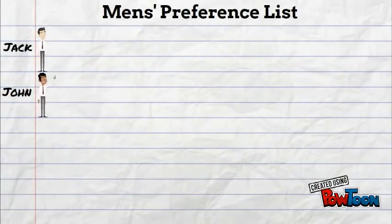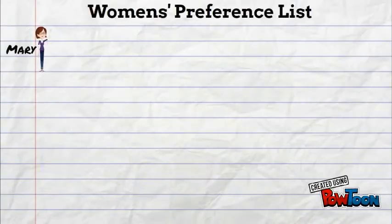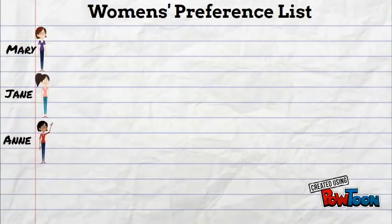To make things simpler, let's look at an example. In this example, there are 4 men: John, Jack, Matt and Tom, each with their preference list. Similarly, there are 4 women: Mary, Jane, Anne and Liz, also with preference lists.